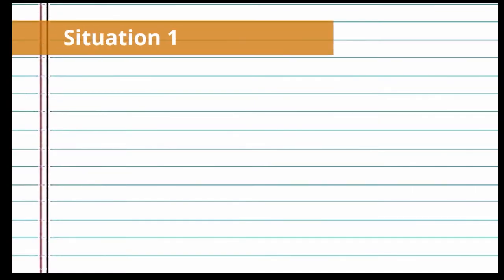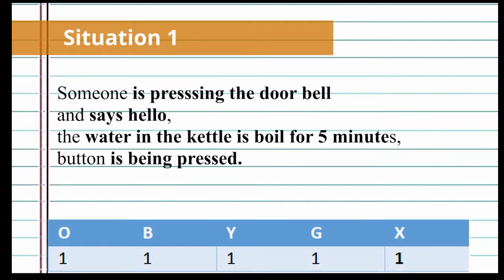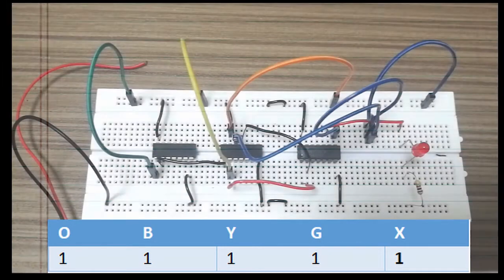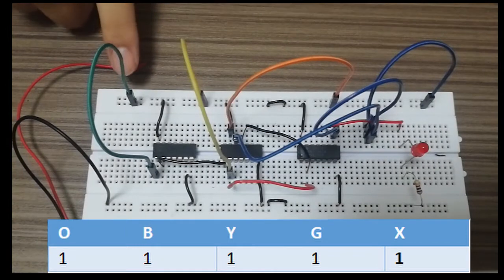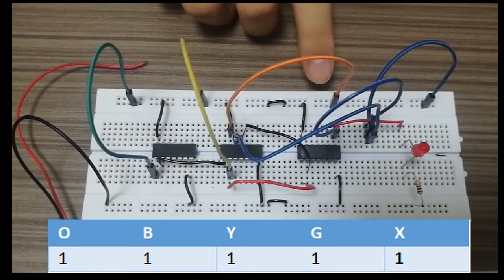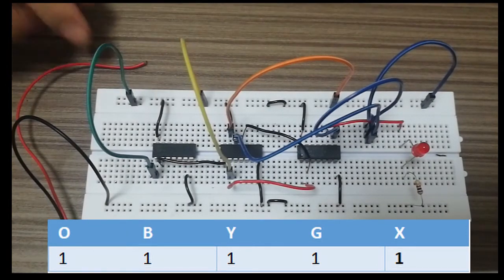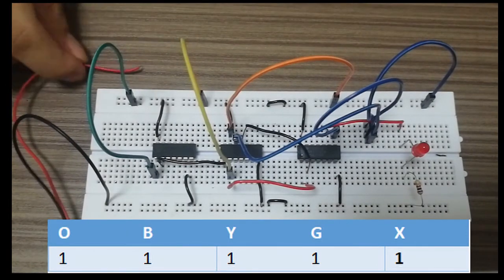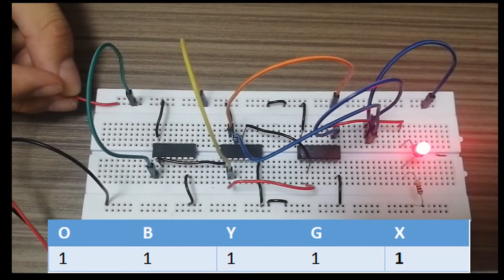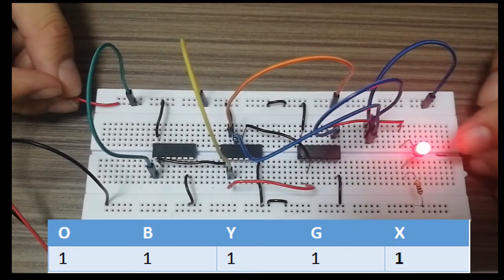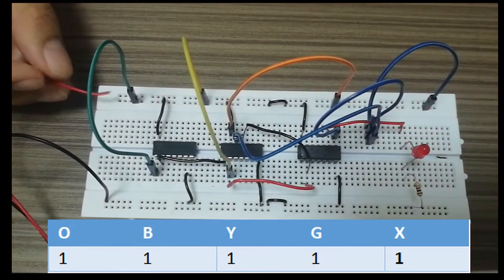Consider the situation where someone is pressing the doorbell and says hello, the water is boiled for 5 minutes, and a button is being pressed. This situation is equivalent to the truth table below, meaning all inputs must be connected to high voltage so that when the battery is connected in our circuit, the LED will light up, which matches our truth table.